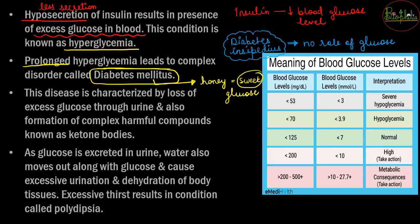In diabetes mellitus, a symptom is the loss of excessive glucose through urine. If glucose is going through the urine, harmful compounds called ketone bodies can also be found in the urine. As glucose is filtered out, water is also attracted towards it. Just like in the collecting tubule, as glucose enters urine formation, water molecules are also pulled in.